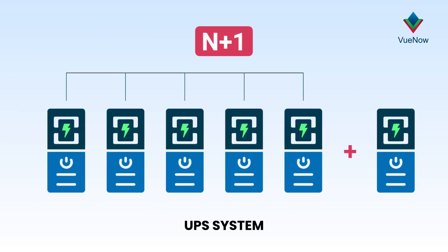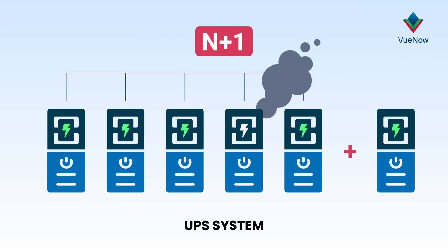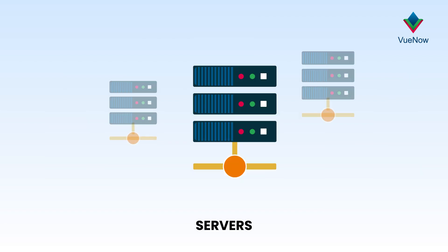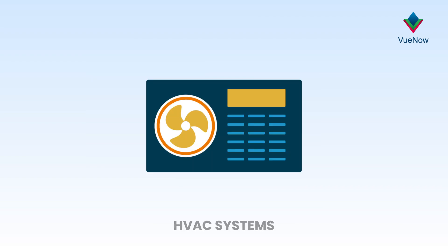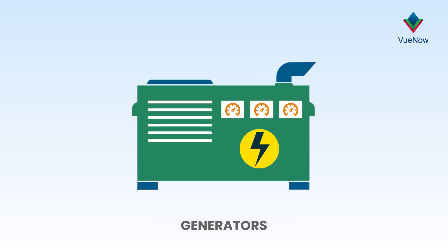N plus 1: similarly, if a datacenter needs 5 UPS units to operate, an N+1 plan means 5 plus 1. That way, if one UPS unit fails, there is an extra UPS that can kick in to pick up the slack. This applies to all types of components — servers, storage hardware, HVAC systems, and generators.